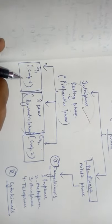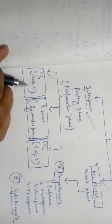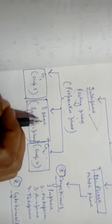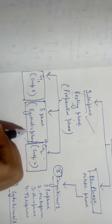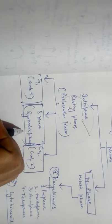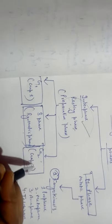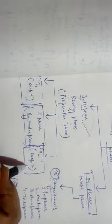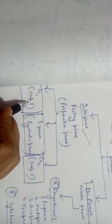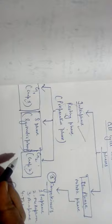The sub-phases of the interphase are: the first one is the G1 phase, also called gap one; the second one is the S phase, also called the synthetic phase; and the third one is the G2 phase, also called gap two.